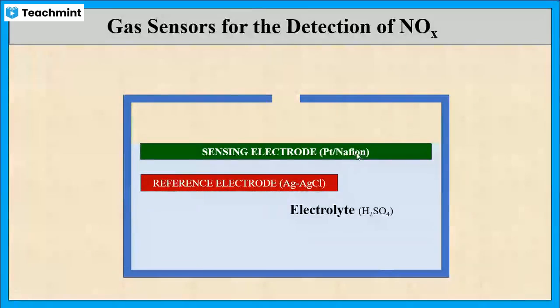Next one is the reference electrode which is made up of silver-silver chloride. This electrode is placed close to the sensing electrode. This electrode maintains the same fixed voltage at the sensing electrode.